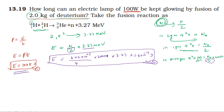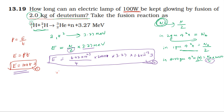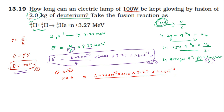The total energy equation gives: Energy equals 6.023 into 10 power 23, multiplied by 2000, multiplied by 3.27, multiplied by 1.6 into 10 power minus 13, divided by 4 joule.